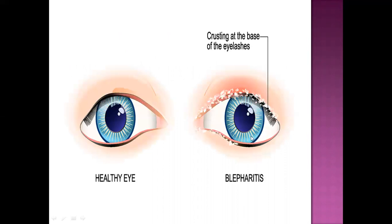The diagram for blepharitis shows a characteristic feature: crusting at the base of eyelashes. The eyelashes are surrounded by a crystal-like structure that sticks one eyelash to another. That is what happens in blepharitis.